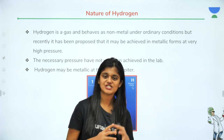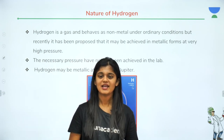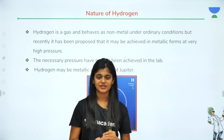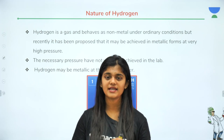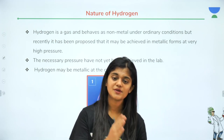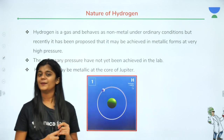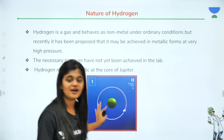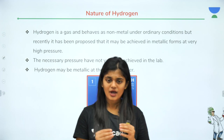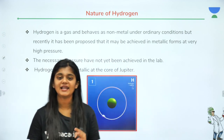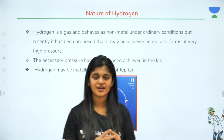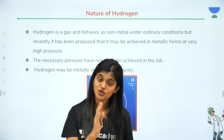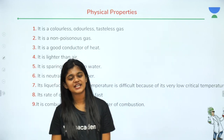At atmospheric pressure, hydrogen is a non-metal. However, recent research has found that if you increase the pressure, it will actually act like a metal. In a laboratory we cannot achieve such high pressure artificially. If you go to the core of Jupiter, hydrogen may be metallic there due to the extremely high pressure — but here in our lab, we use hydrogen in its non-metal form.